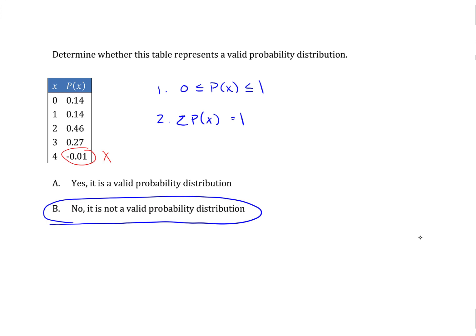But both of these properties have to hold in order for it to be a valid probability distribution. And since the first one doesn't apply, then it's not a valid probability distribution.